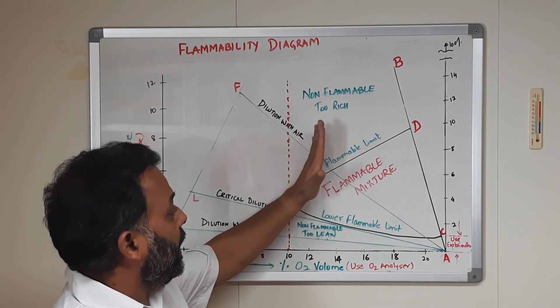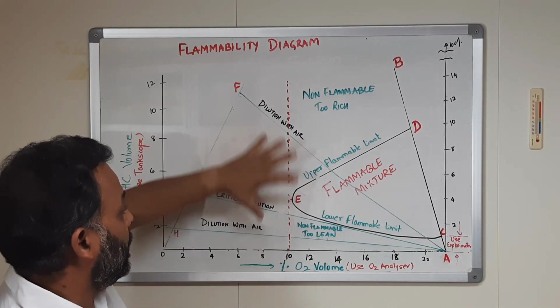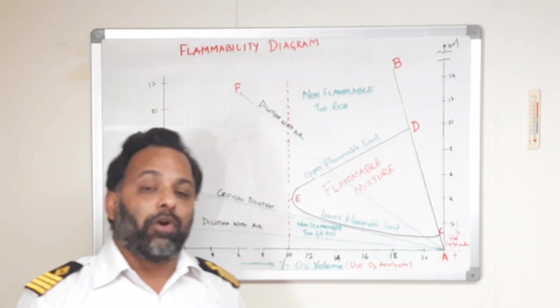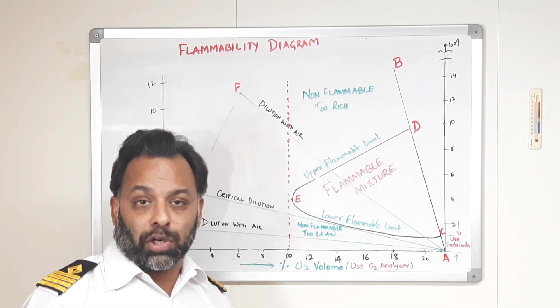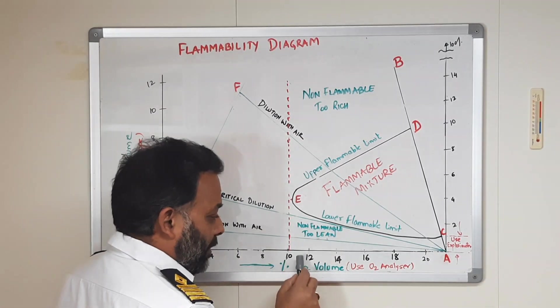Now, if we keep on introducing inert gas further than this, we will come into a region, we will come to an area where the fire cannot take place because the amount of oxygen in the system is less than what is required. This point E is somewhere around 11% of oxygen.